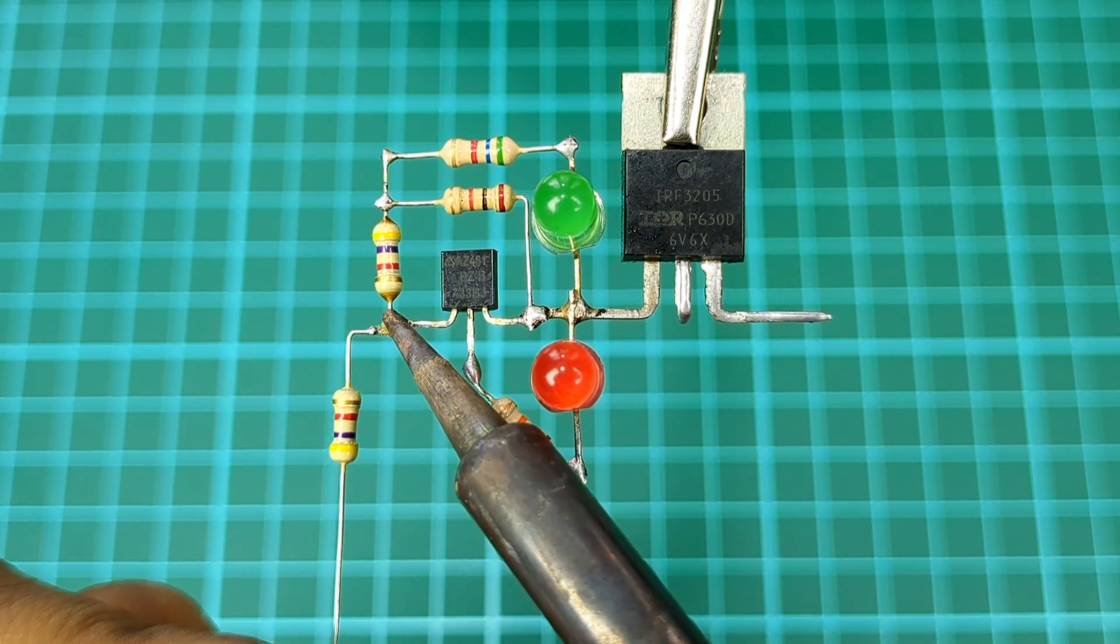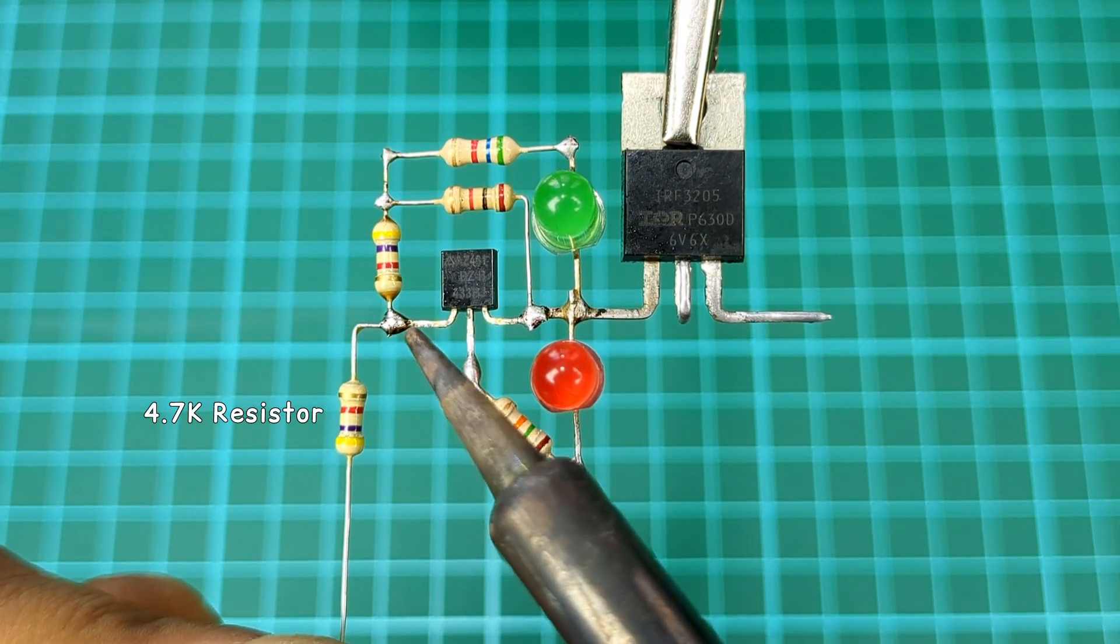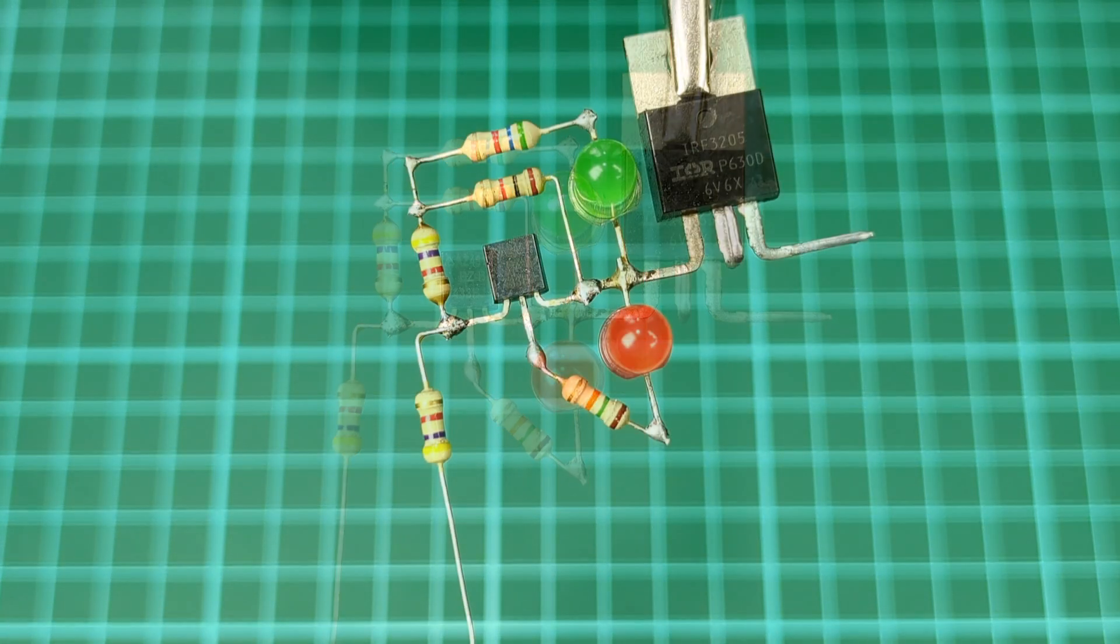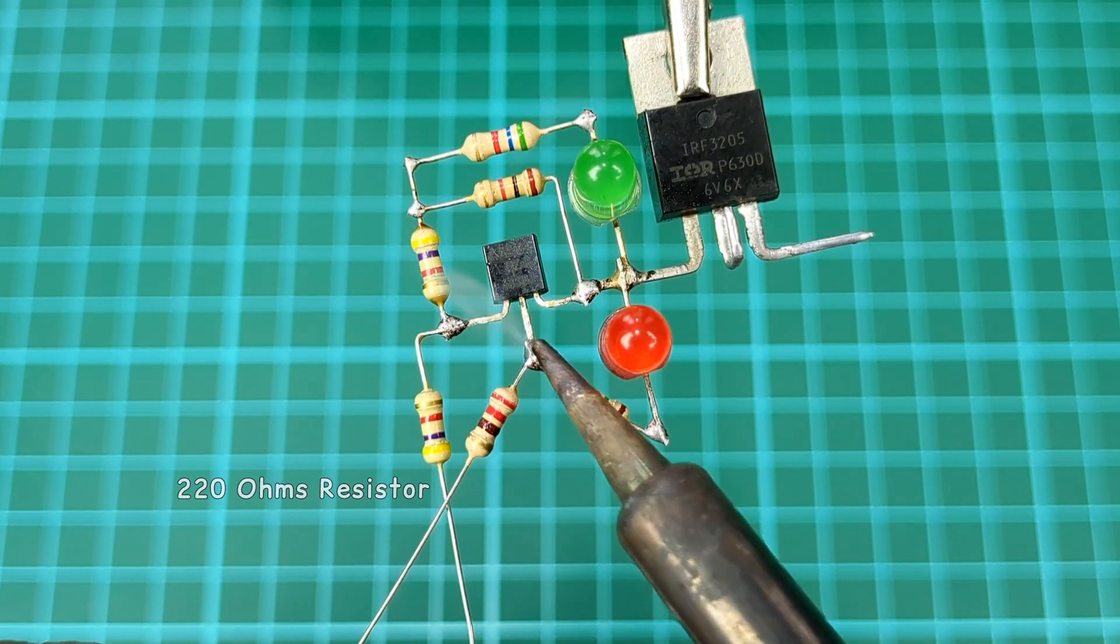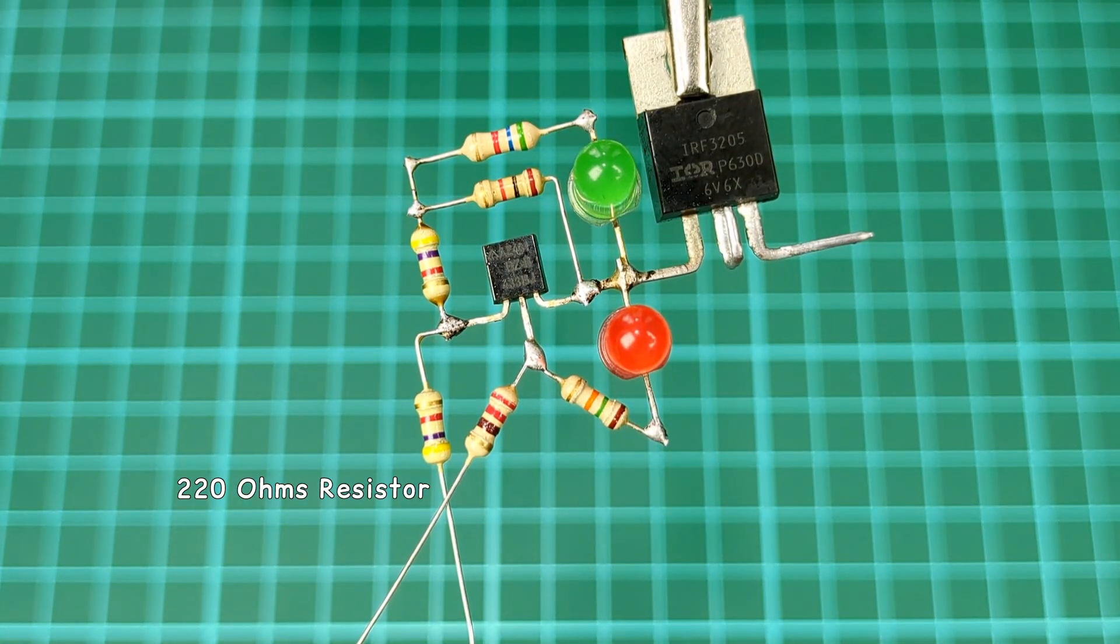Take another 4.7 kilo ohm resistor and connect it to first pin of the shunt regulator. Take a 220 ohms resistor and connect it from second pin of the shunt regulator.